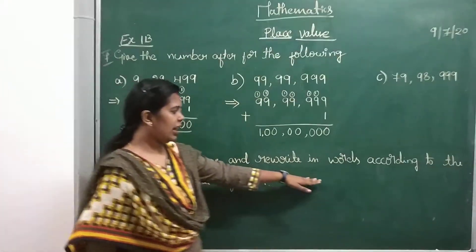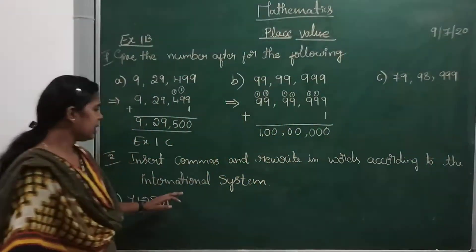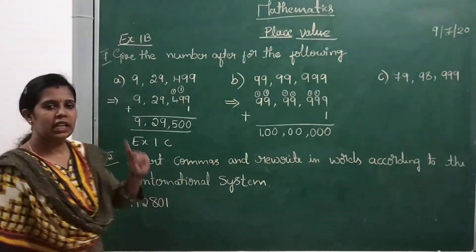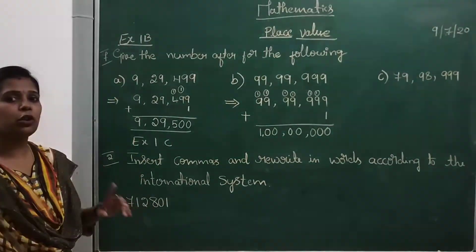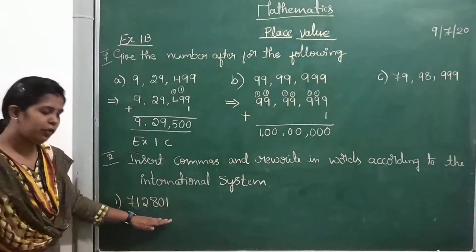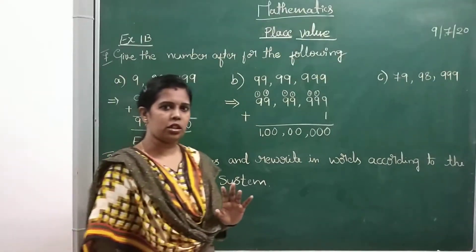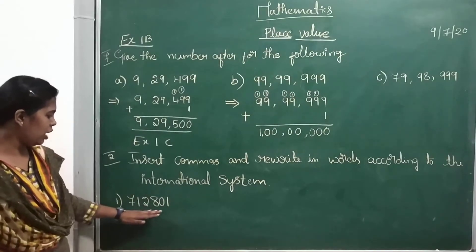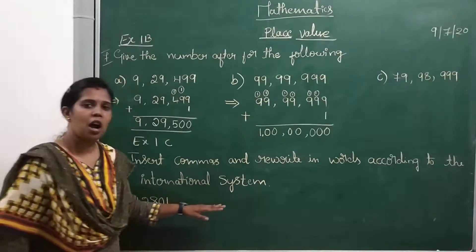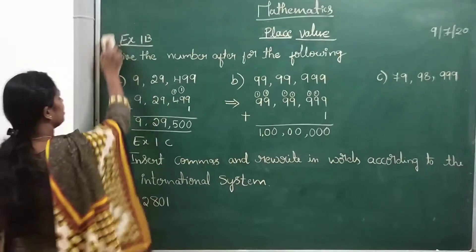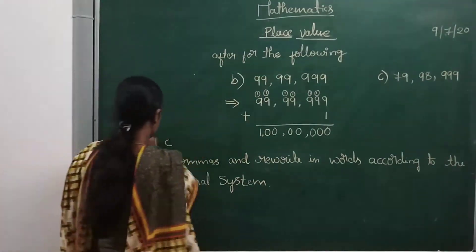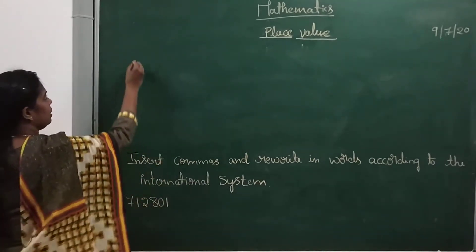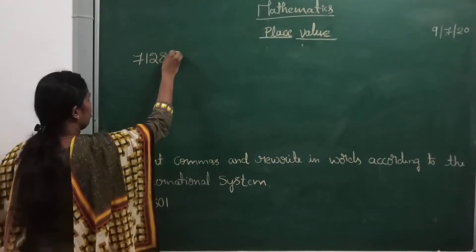Next: insert commas and rewrite these numbers according to the international system of numeration. Here we have given numbers we need to write in the international system of numeration. In our previous exercise 1a, we wrote according to the Indian system. Today we have to write according to the international system. I have explained this before and will explain once more. The number given is 712801.